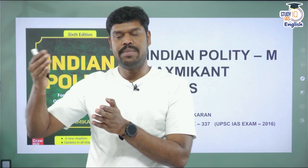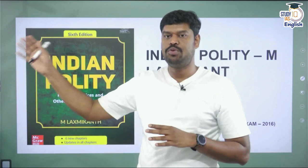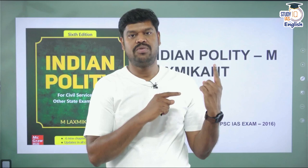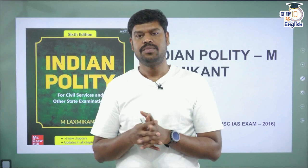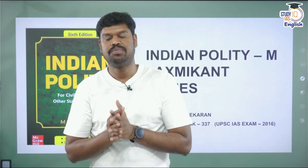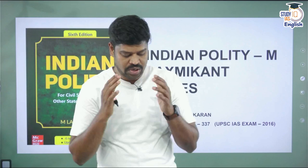This class is to revise whatever we have learned. In the historical background, we saw that the British ruled India in two phases: company rule and crown rule. Company rule ran from 1773 till 1857; then after the revolt of 1857, the Government of India Act 1858 was passed, and administration transferred to the British Crown, continuing until the Indian Independence Act 1947. We will revise through practice questions.